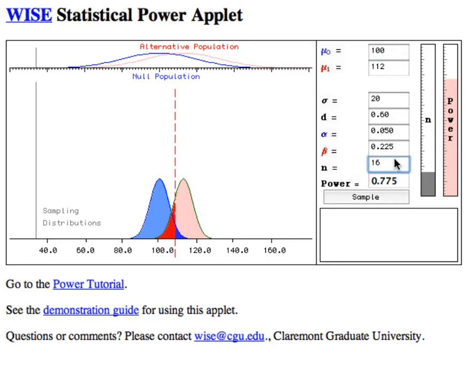First we can increase the sample size, and as we do that, power should also increase because standard error, or the spread of each of these distributions, will go down. So when I hit enter, you're going to see both of these cluster more tightly around their means,